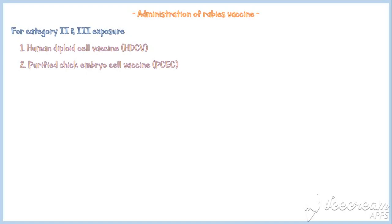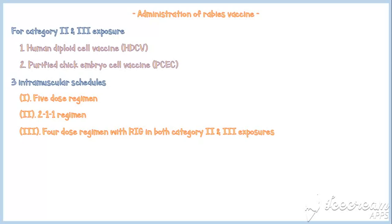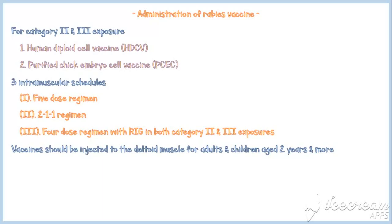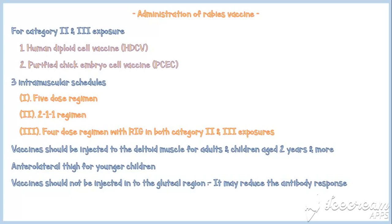Administration of rabies vaccine is recommended for Category 2 and 3 exposures. Two types of rabies vaccines are available: human diploid cell vaccine and purified chick embryo cell vaccine. Three intramuscular schedules are available: the five-dose regimen, the 2-1-1 regimen, and the four-dose regimen with rabies immunoglobulin for both Category 2 and 3 exposures. Rabies vaccines should be injected into the deltoid muscle for adults and children aged 2 years or more. For younger children, the anterolateral thigh is recommended. Vaccines should not be injected into the gluteal region as it may reduce the antibody response.